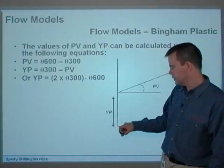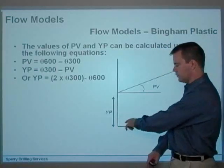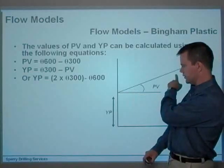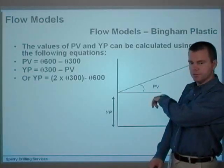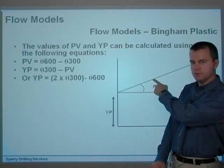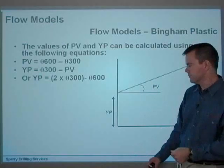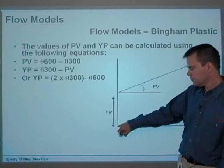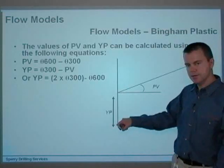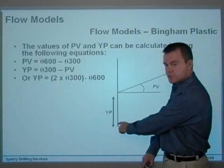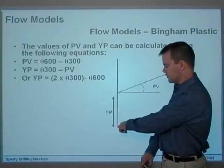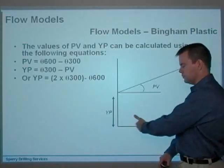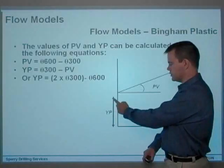If the YP was zero, then that line would go straight through the origin and would be describing what's known as a Newtonian fluid, because we've got a straight line. PV is pretty much the viscosity of that fluid, or the thickness of the fluid. And the YP is the point at which it starts to move. If the YP is zero, then the fluid starts to move as soon as you apply a shear stress to it. It starts shearing. It immediately has a shear rate as soon as you apply a shear stress.